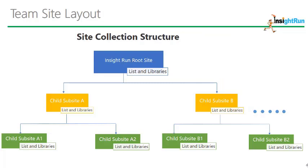Now let's have a look at Team Site Layout. SharePoint sites are part of a hierarchy that is grouped in a site collection. There is always one site that is the root site of the site collection, but below that site can be many child sites. Lists and libraries can be created within each site in the site collection. The site collection defines the basic storage as well as the administration and permissions. This diagram illustrates a conceptual view of how sites might be organized in a site collection. Note that InSiteRun is a root site within the site collection and other sites are child sites under the root site, and you can create any number of child sites as you require.